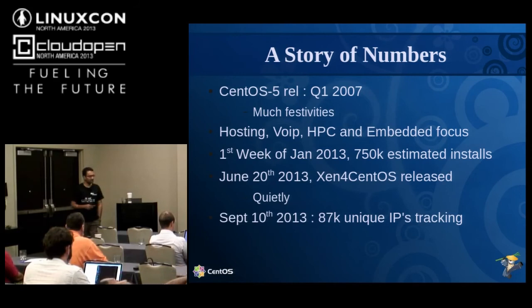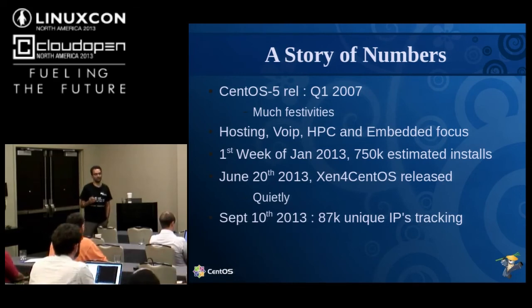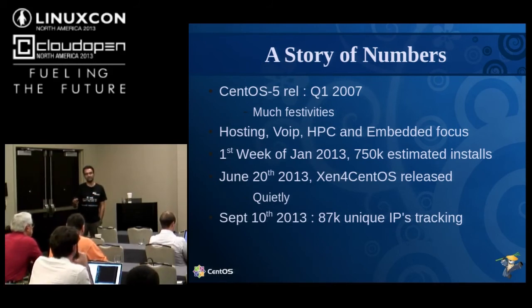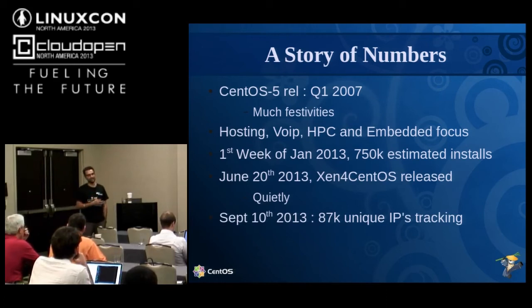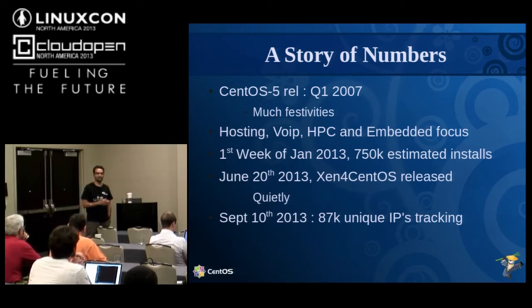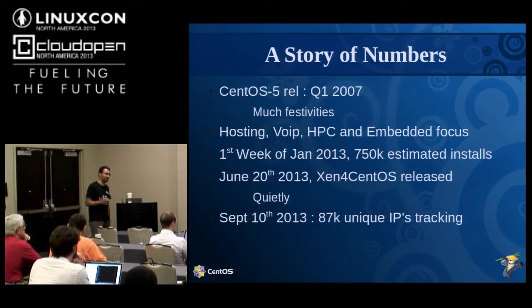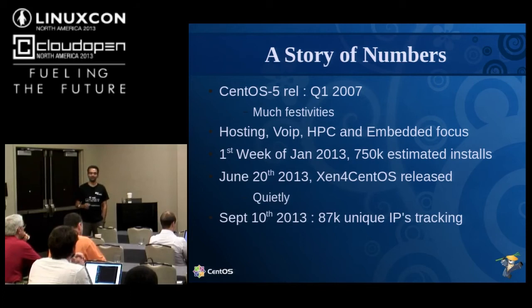June 20th, we released it — kind of quietly, there hasn't been a lot of fanfare because we let it grow organically. The plan was that when Xen Server becomes a YUM install and things like that, we'll start making more noise about it. But September 10th, I went through the same exercise. The number of unique IPs actually hitting YUM against the Xen for CentOS repositories — not drive-by hits — was about 87,000. It was 98.5% IPv4, and about four guys were using IPv6.